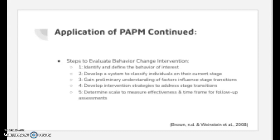PMPM is utilized to develop and evaluate behavior change interventions. To implement these, there are five steps that can be followed to achieve success. The first step is to identify and define a behavior of interest. PMPM focuses on the adoption of specific health behaviors such as cholesterol testing or broader health behaviors such as increasing exercise. Once the health behavior is defined, the second step is to classify individuals based on their current stage in the PMPM model. This classification can then be applied to the target population being evaluated. Third, an understanding must be gained on the factors that influence transition between the different stages of the PMPM.